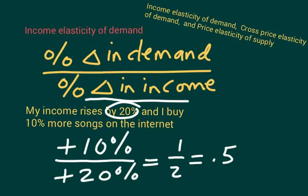Keep in mind that as my income goes up, I'm buying more songs. Earlier in unit two, we called this a normal product — when your income goes up, you buy more. There are some products where if your income goes up you buy less, because you have more money, so you buy fewer inferior products. In that case, the income elasticity of demand would be negative. So here we specify this is a plus 0.5. Income elasticity of demand can be positive or negative, whereas price elasticity of demand is always negative, so we always leave off the negative sign. Income elasticity is positive for a normal product and negative for an inferior product.